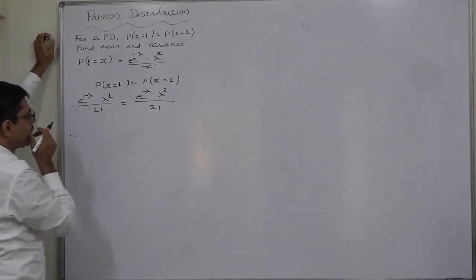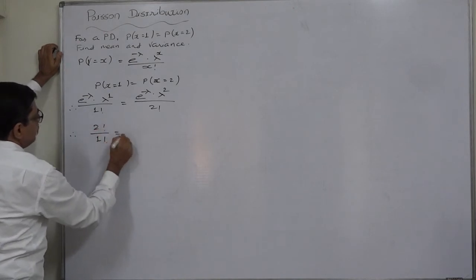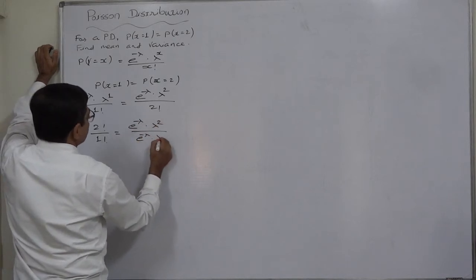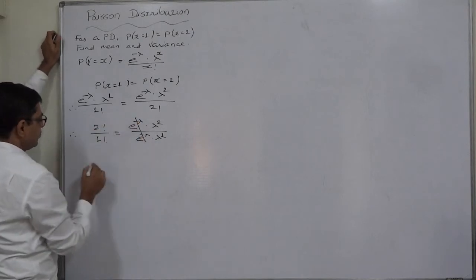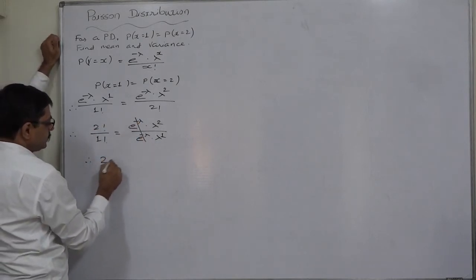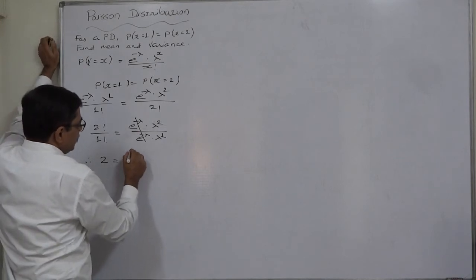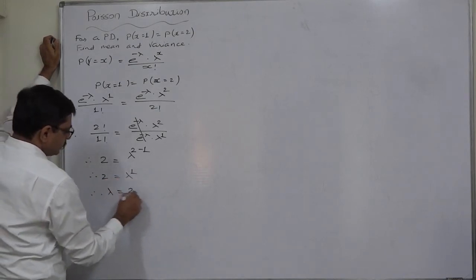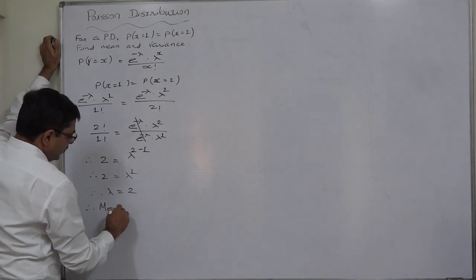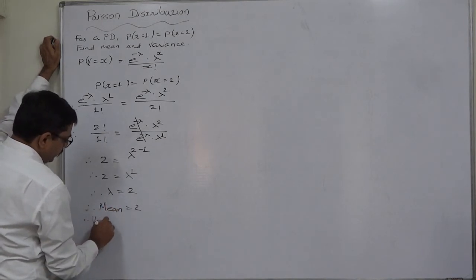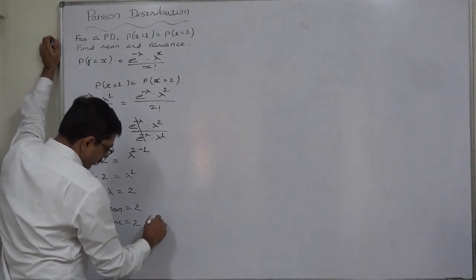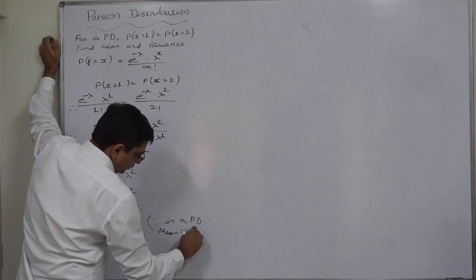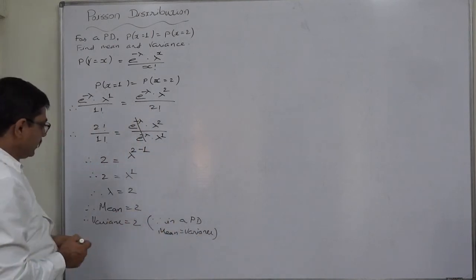Considering this step, we can cancel the e^(-λ) terms. Since 2 factorial is 2 and 1 factorial is 1, we get 2 equals λ^(2-1), therefore 2 equals λ^1, so lambda equals 2. Therefore mean equals 2, and variance equals 2, because in a Poisson distribution mean equals variance — both are 2.